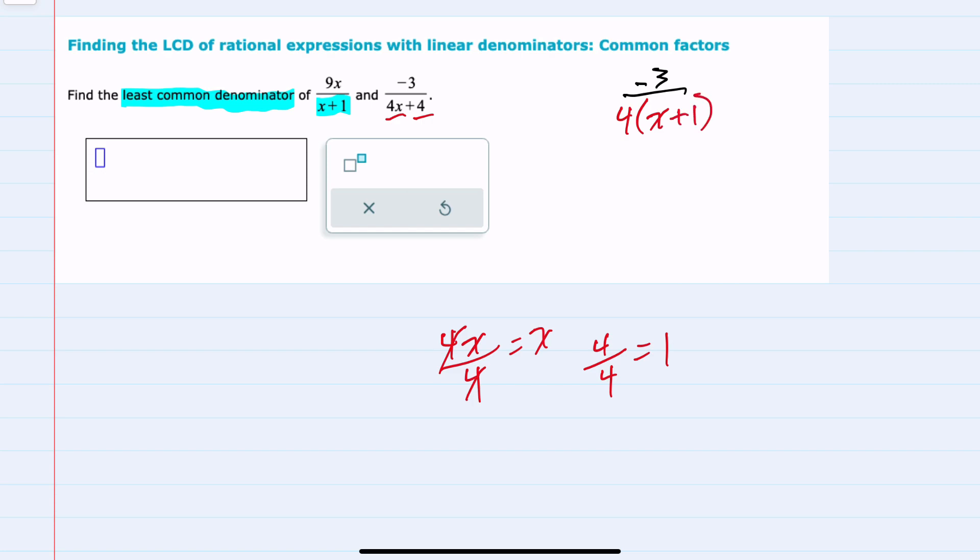Our second fraction here has simplified, now that I factored it, to two factors, 4 times x plus 1. And I can see that comparing it to that first fraction, which was 9x over x plus 1...